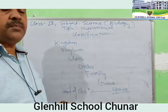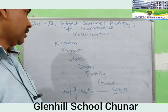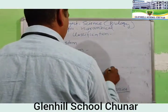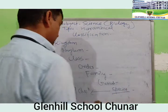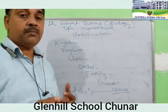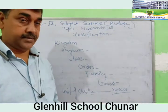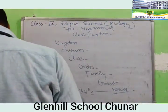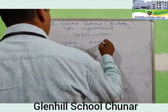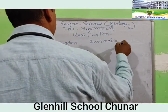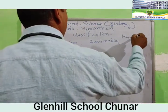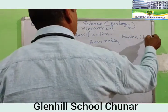This is the formula of classification: Kingdom, Phylum, Class, Order, Family, Genus, Species. Let's take the classification of humans as an example.